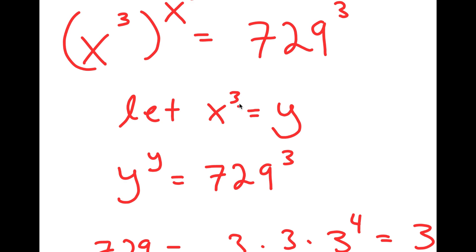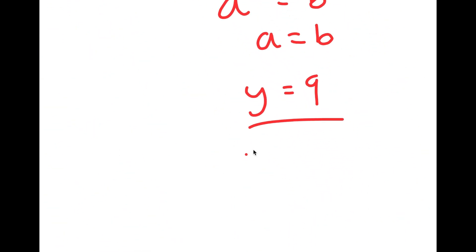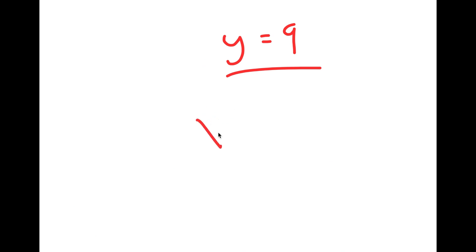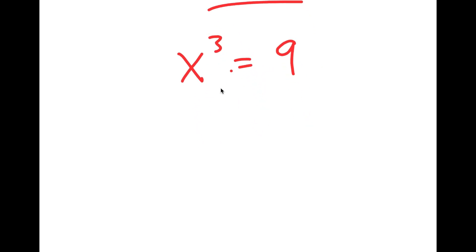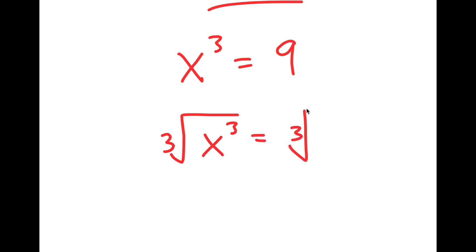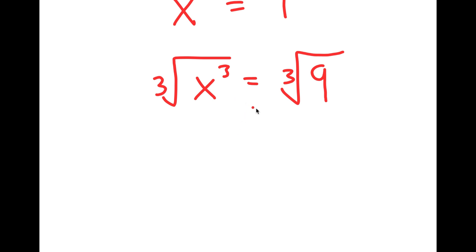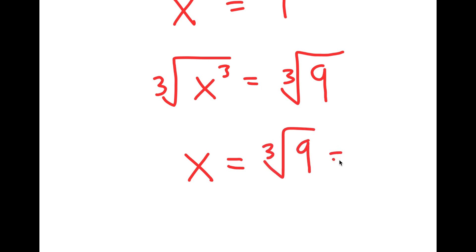Recall how I let x to the power of 3 equal to y. Meaning I get x to the power of 3 is equal to 9. So now to solve this, I'm going to take the cube root on both sides. The cube root of x to the power of 3 is simply x. So I get x is equal to the cube root of 9, which is the same thing as 9 to the power of 1 third.